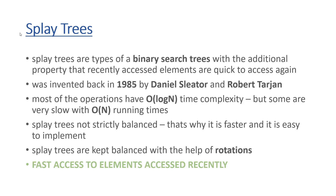Splay trees are types of binary search trees. They have tree-like structures, which means that every single node may have two children — a left child and a right child. The left child is smaller than the parent node, the right child is greater than the parent node. Splay trees are binary search trees with the additional property that recently accessed items are quick to access again.